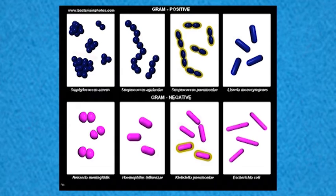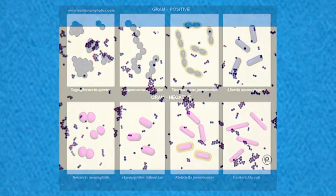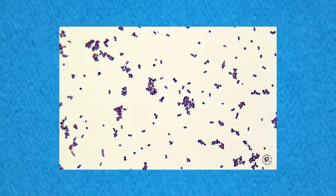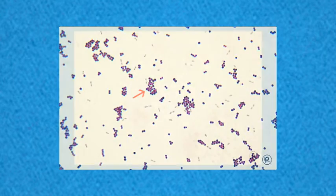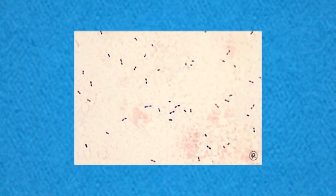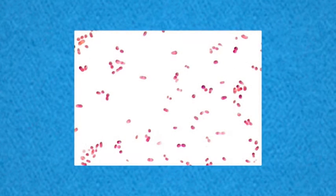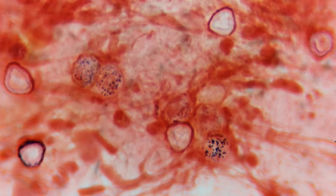Gram-positive bacteria appear purple while Gram-negative appear pink. Organisms identified include Gram-positive bacteria in chains, Gram-positive bacteria in clusters, diplococci, Gram-negative cocci, Gram-negative bacilli, microsporidia spores, and Acanthamoeba cysts.